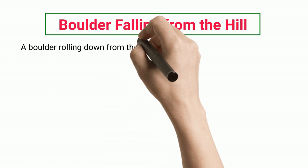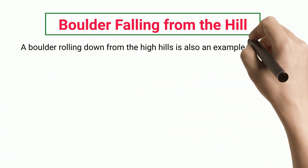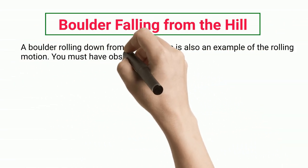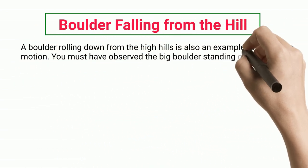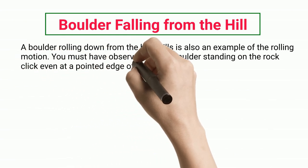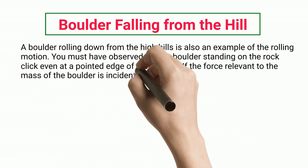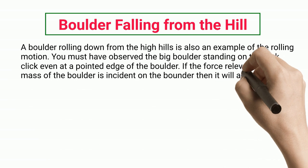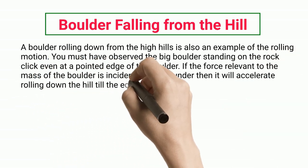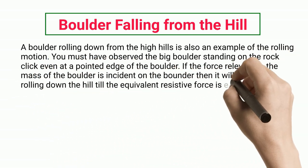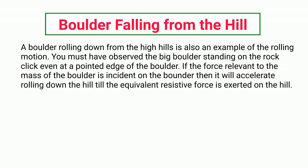Boulder falling from the hill. A boulder rolling down from high hills is also an example of rolling motion. If the force relevant to the mass of the boulder is incident on the boulder, then it will accelerate rolling down the hill until an equivalent resistive force is exerted.